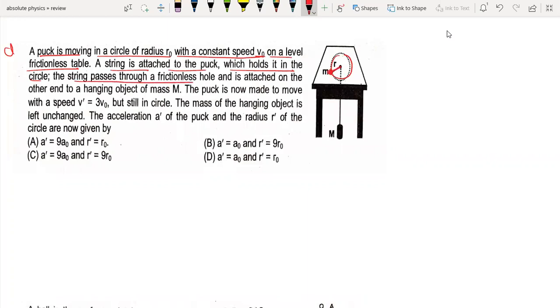The string passes through a hole and is attached on the other end to a hanging object of mass M. The string passes from the hole and is attached to the hanger.